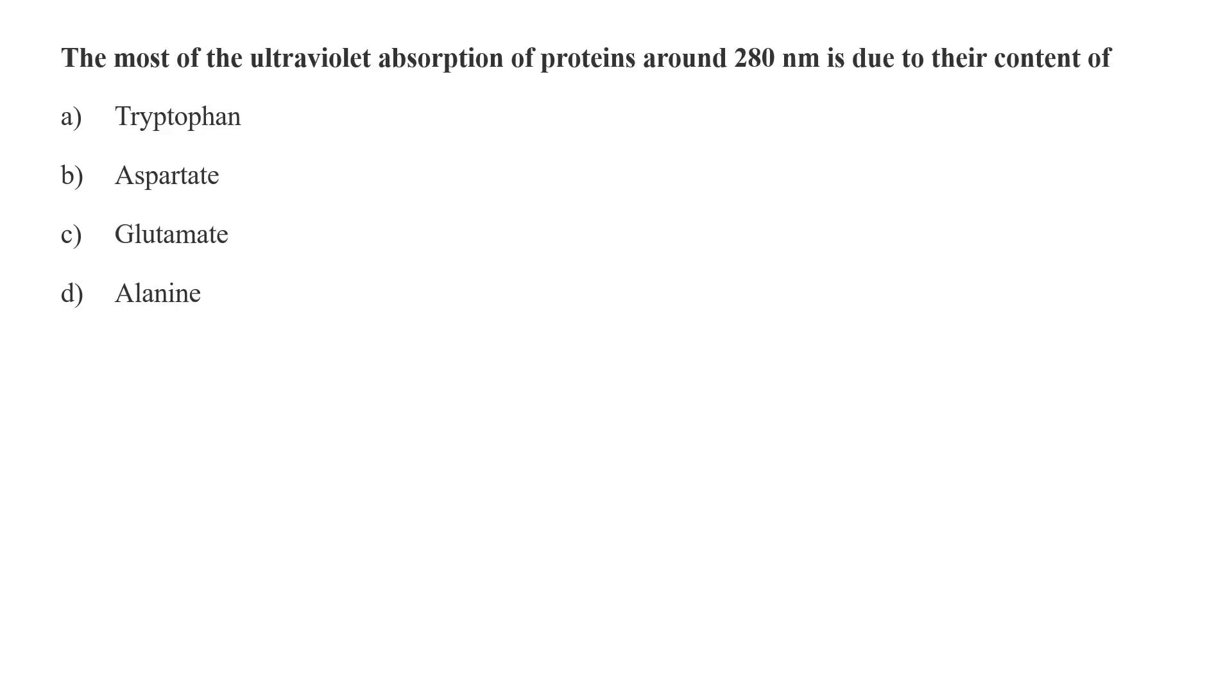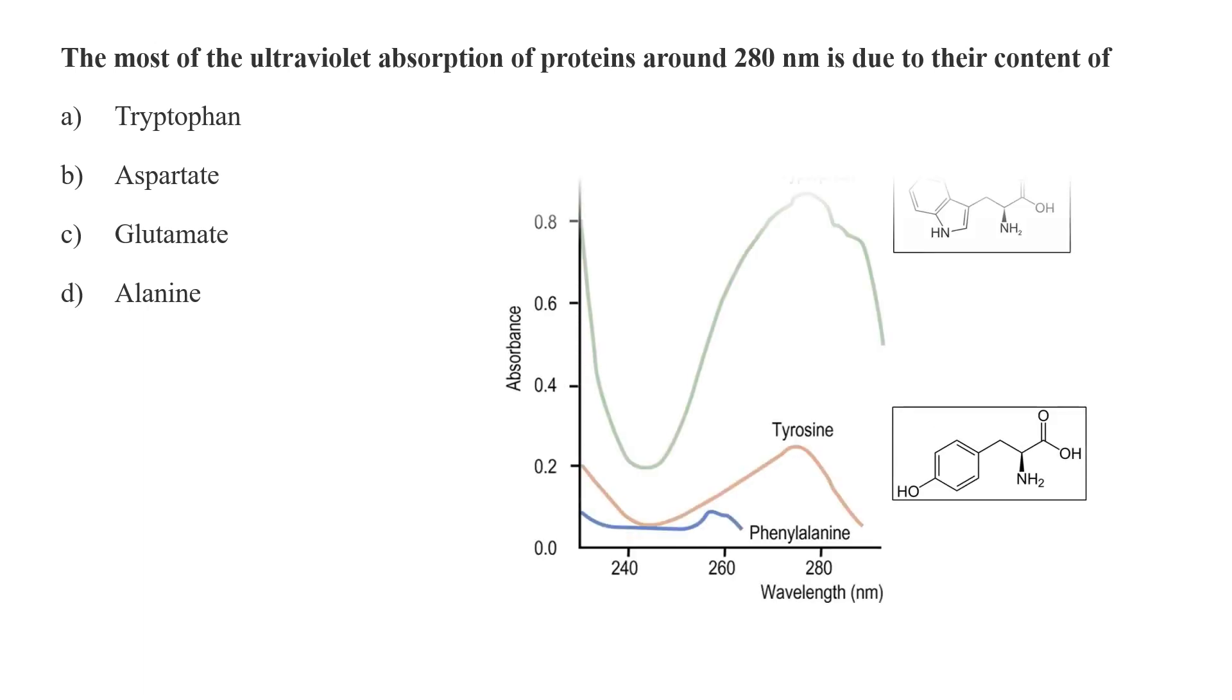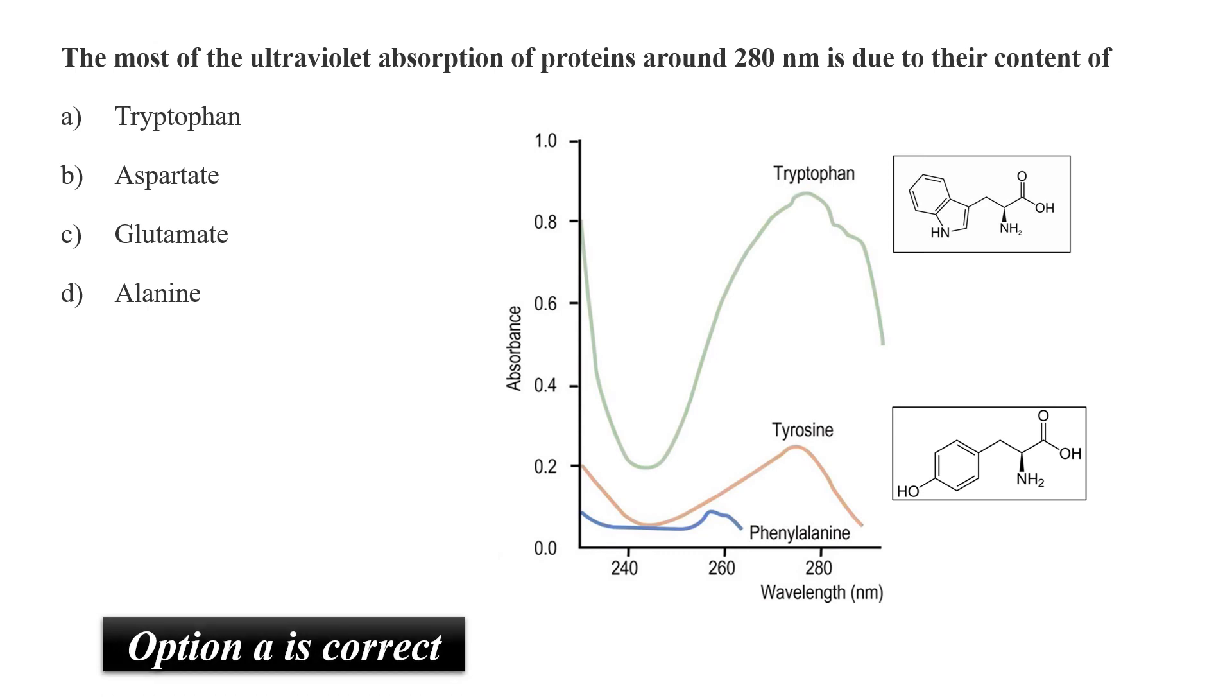Most of the ultraviolet absorption of proteins around 280 nm is due to their content of tryptophan, aspartate, glutamate, or alanine? UV absorption of proteins in the range of 230 to 300 nm is mostly dominated by the aromatic side chain of tryptophan, tyrosine, and phenylalanine. Tryptophan and tyrosine both strongly absorb at 280 nm, while phenylalanine does at 255 nm. Out of the given options, tryptophan should be the correct answer as it is strongly absorbed at 280 nm.